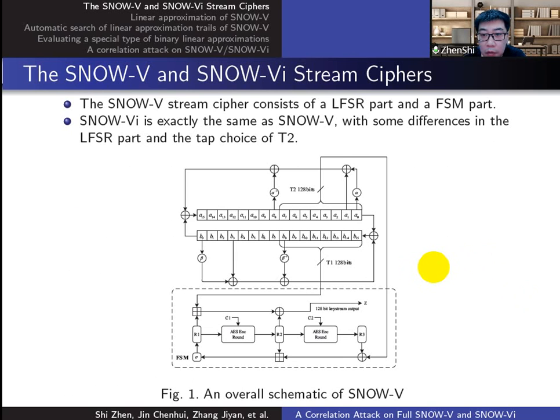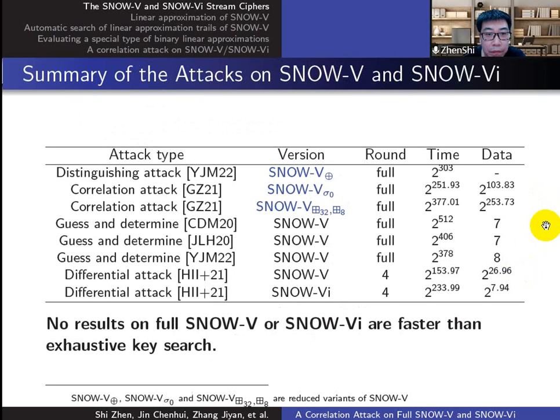SNOW-6 is the same as SNOW-5 except the tap T2 is switched to the left half. The previous results are listed here. As we can see, there is no result faster than exhaustive key search on SNOW-5 or SNOW-6.